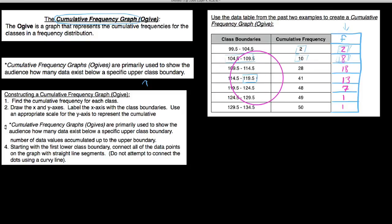Say 119.5, which is an upper class boundary, or below. And we say well 41 did. 41 of our 50 states have a high temperature of 119.5 or below.